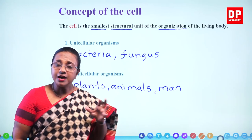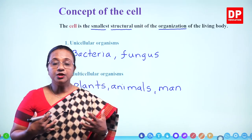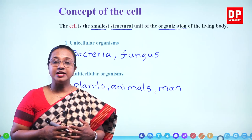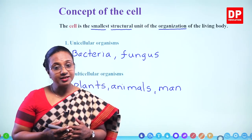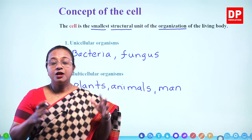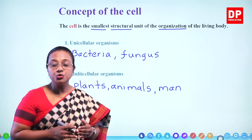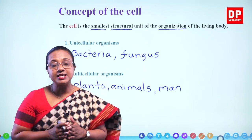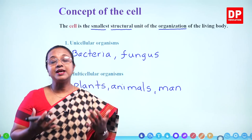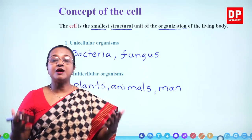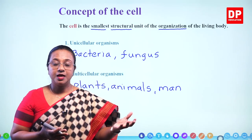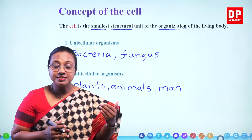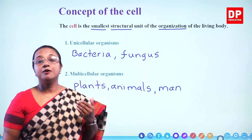If you look at the functions of these organisms — we grow, we respire, we eat food, food undergoes digestion, there is excretion and reproduction. A unicellular microorganism also does all of this — just one cell performs all these functions. But when the complexity increases, the way the function is carried out will vary. Even in multicellular organisms, there are single cells that perform specific functions.